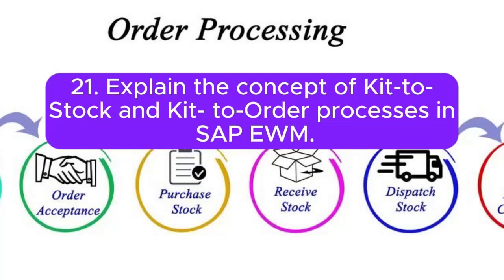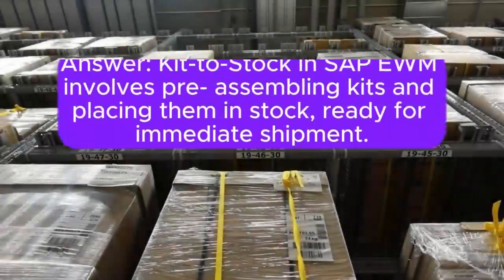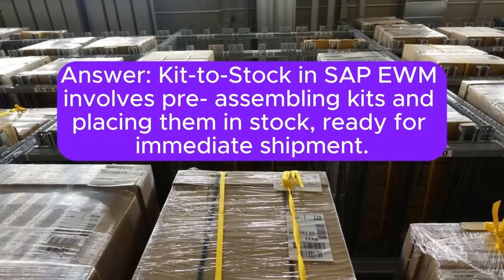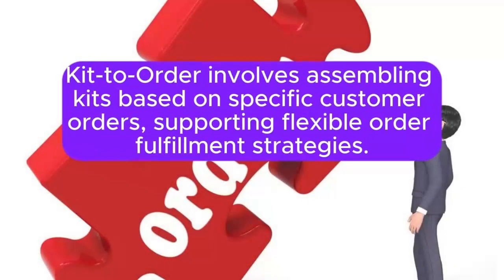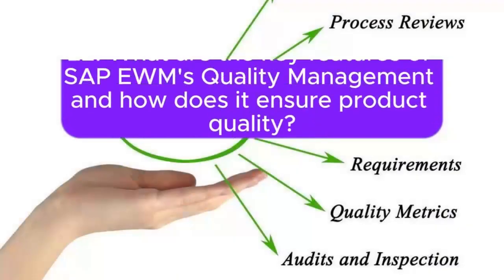Question 21: Explain the concept of kit-to-stock and kit-to-order processes in SAP EWM. Kit-to-stock in SAP EWM involves pre-assembling kits and placing them in stock, ready for immediate shipment. Kit-to-order involves assembling kits based on specific customer orders, supporting flexible order fulfillment strategies.